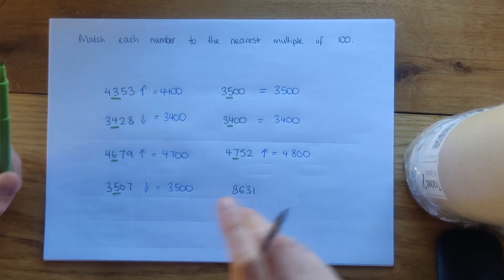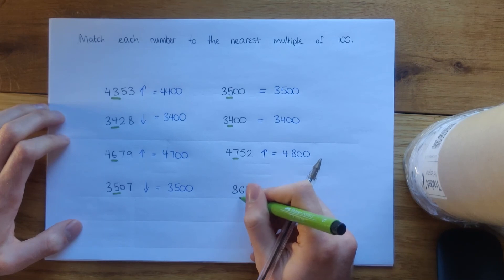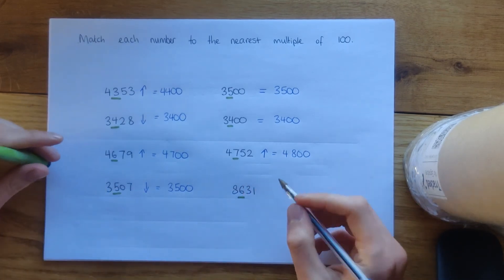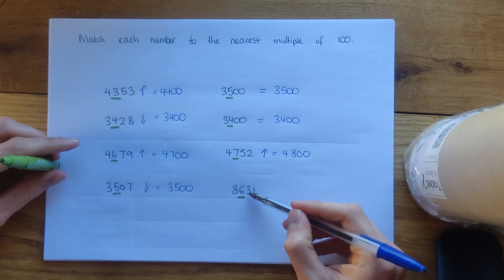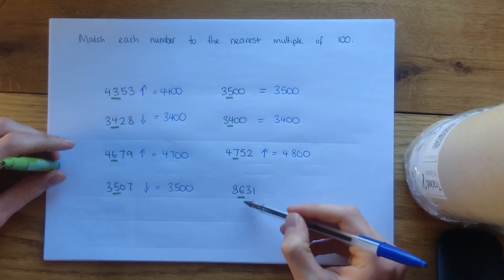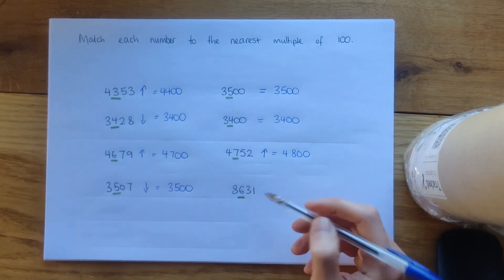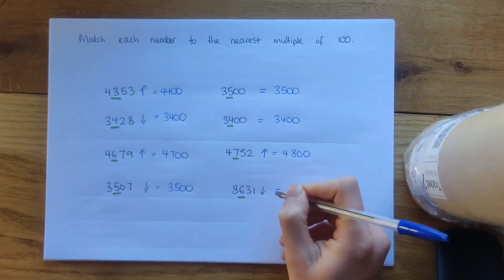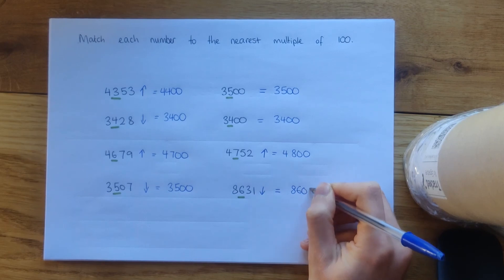In this last one we look at the hundreds column and think: is the tens digit more than 50 or less? We've got three in the tens column — that's less than 50 — so we're going to round this one down and it's going to be left at 8,600.